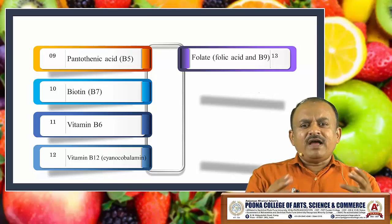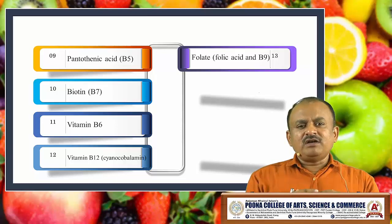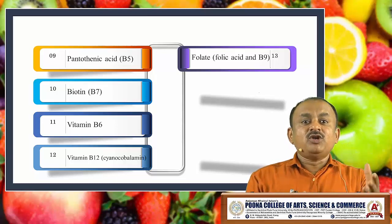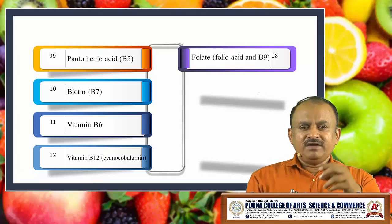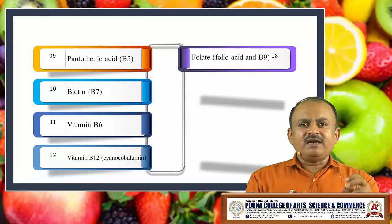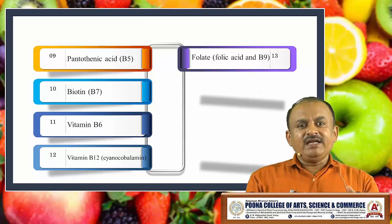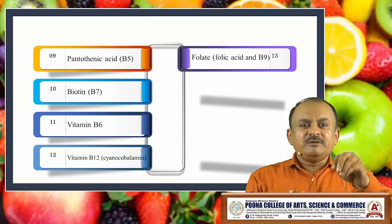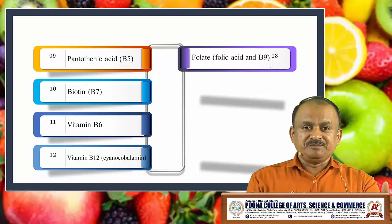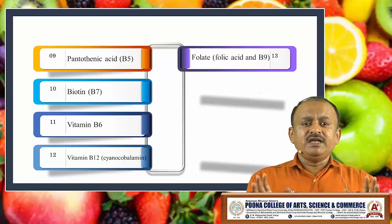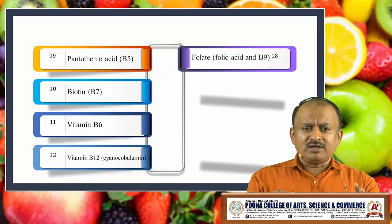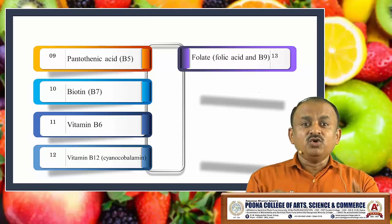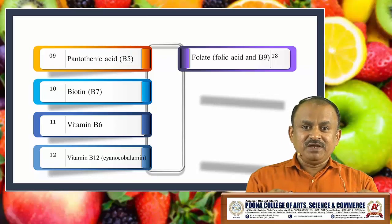If a person is facing a vitamin deficiency, the doctor will first diagnose from blood samples. They will run various tests to determine which deficiency is present in the blood, and then accordingly, the doctor will recommend a solution in the form of tablets or different dietary sources. It is very important to know first which deficiency you are facing.